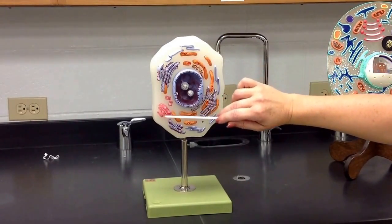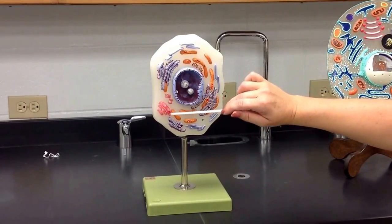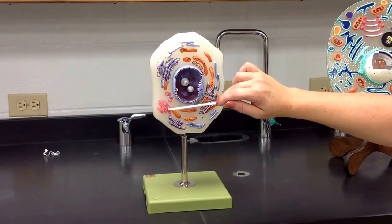Then over here you have your Golgi apparatus. The other model showed vesicles coming off of there. This one kind of gives you that impression, but it doesn't really show the separate vesicles that the other model showed.